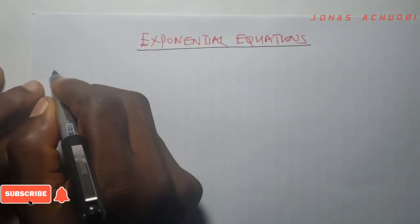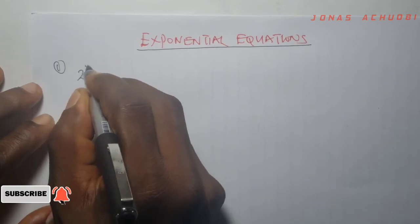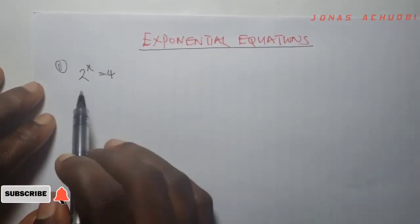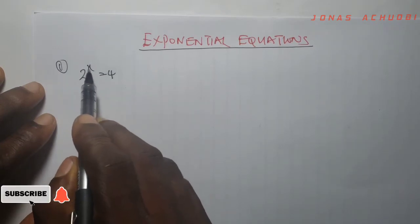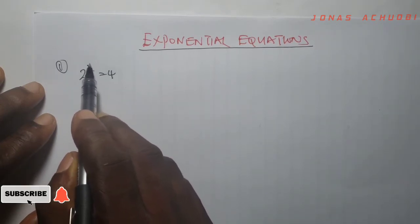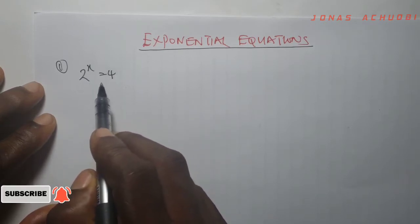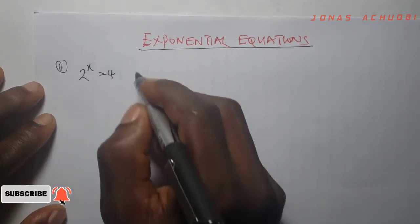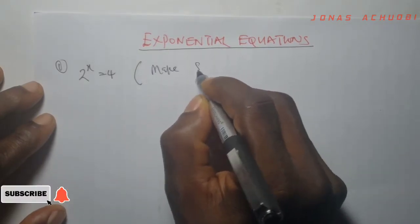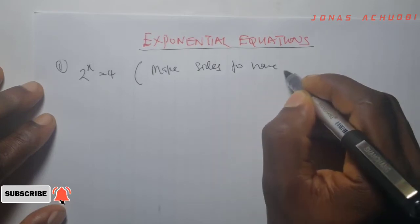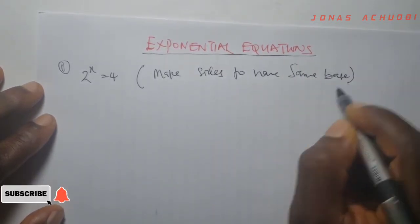For example, you have to solve 2 raised to the power x equal to 4. This is clearly an exponential equation because the unknown x appears as some power of a base 2. Now to solve such equations, the step is very straightforward — you try to make both sides have the same base.